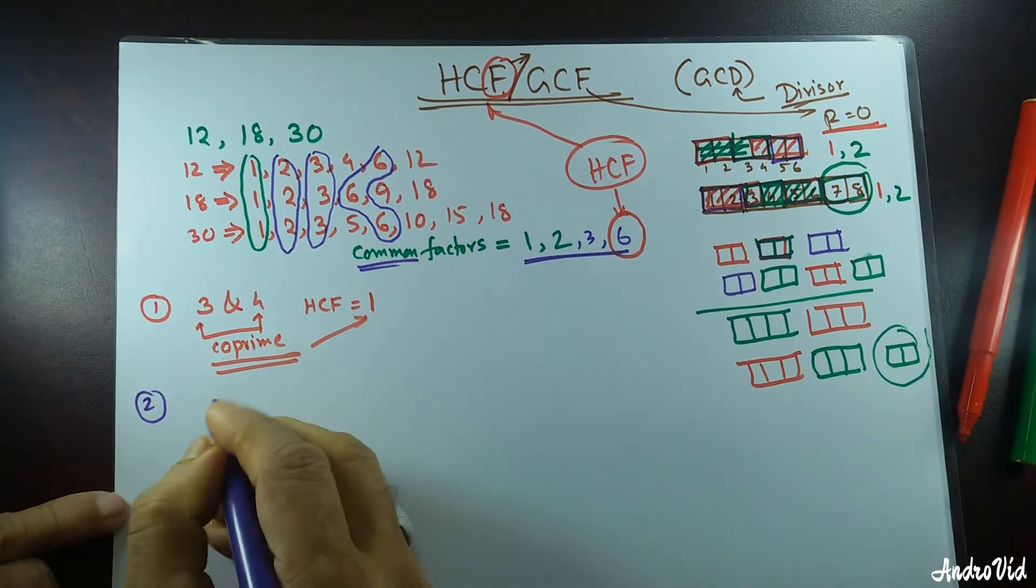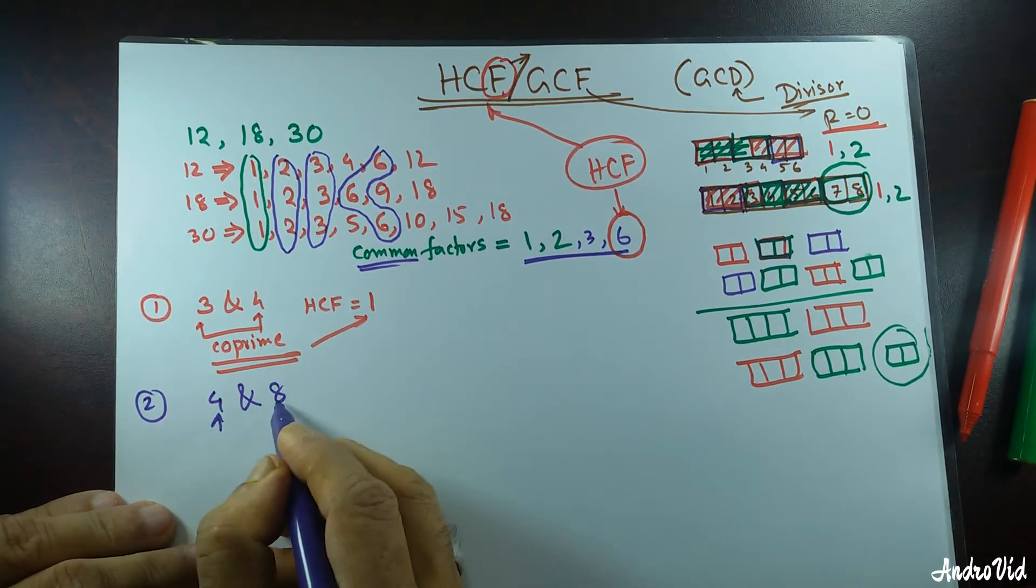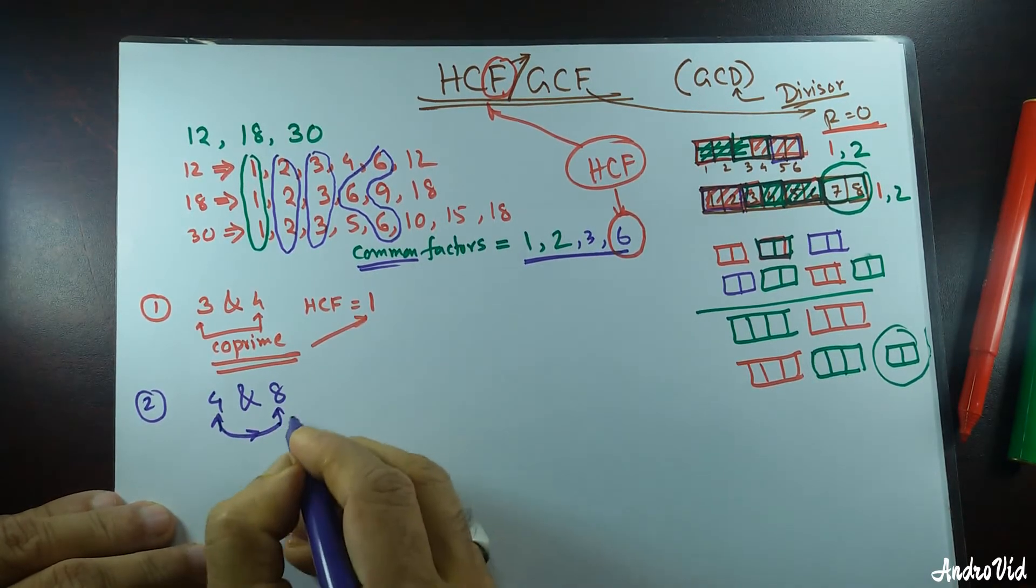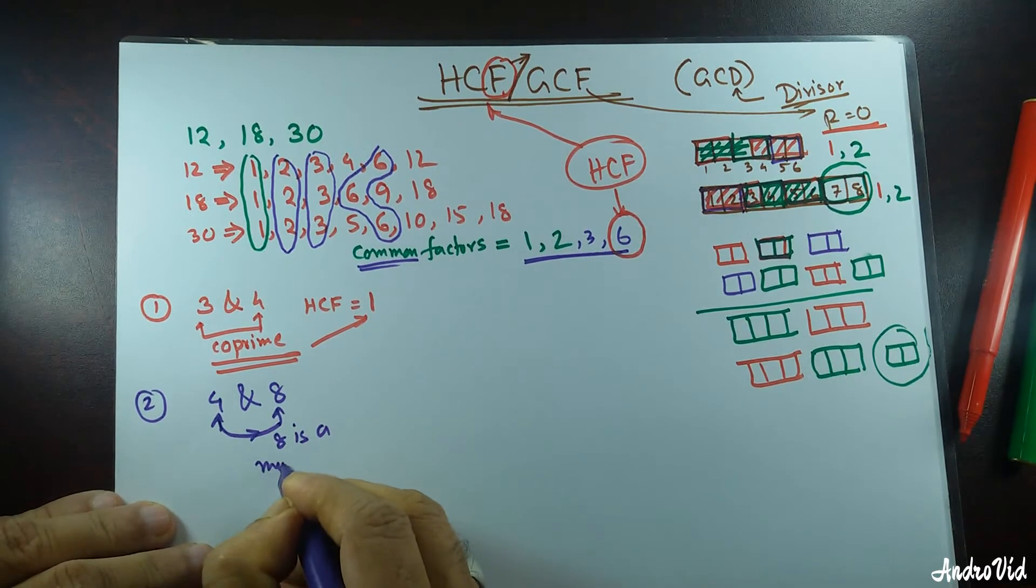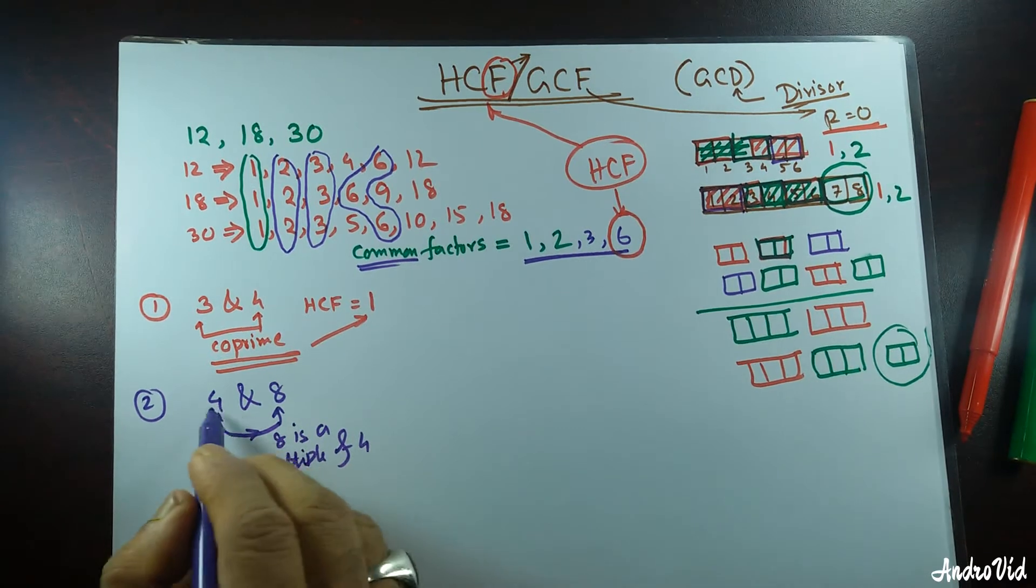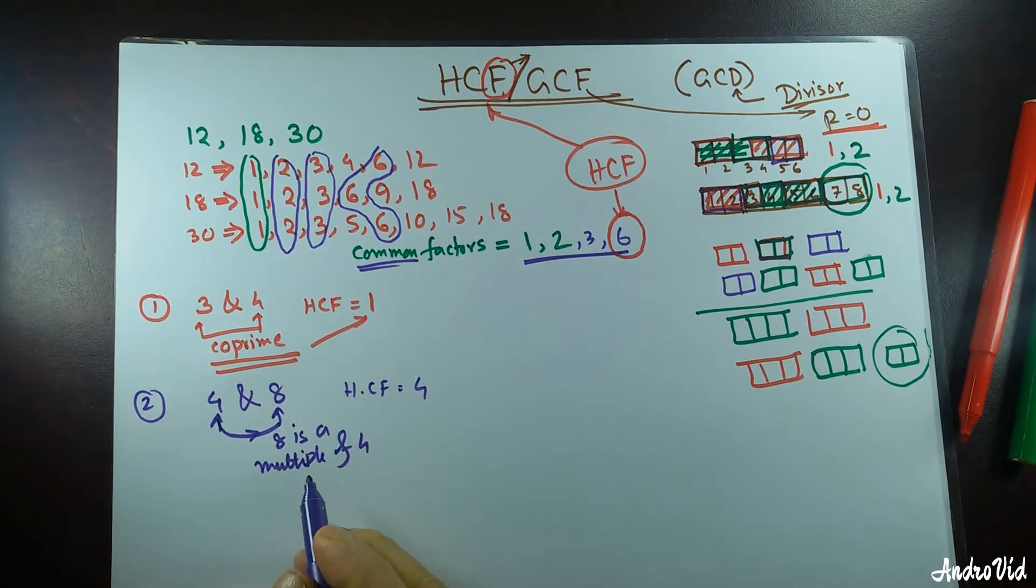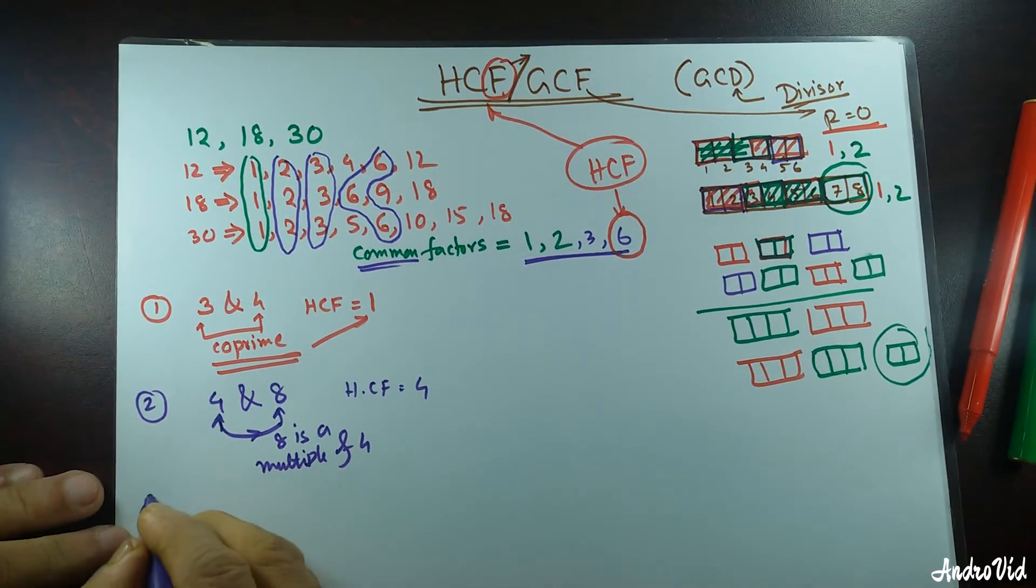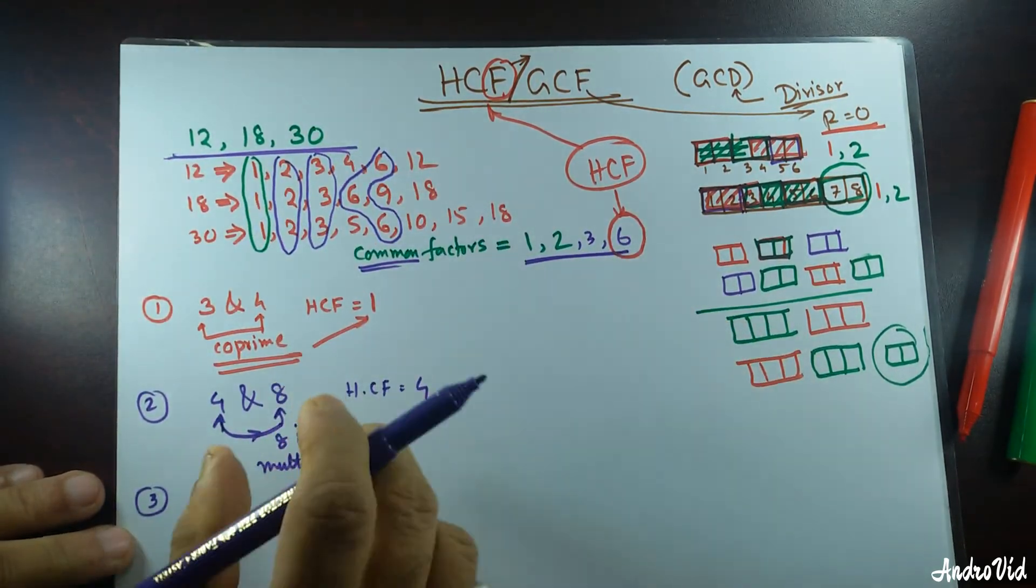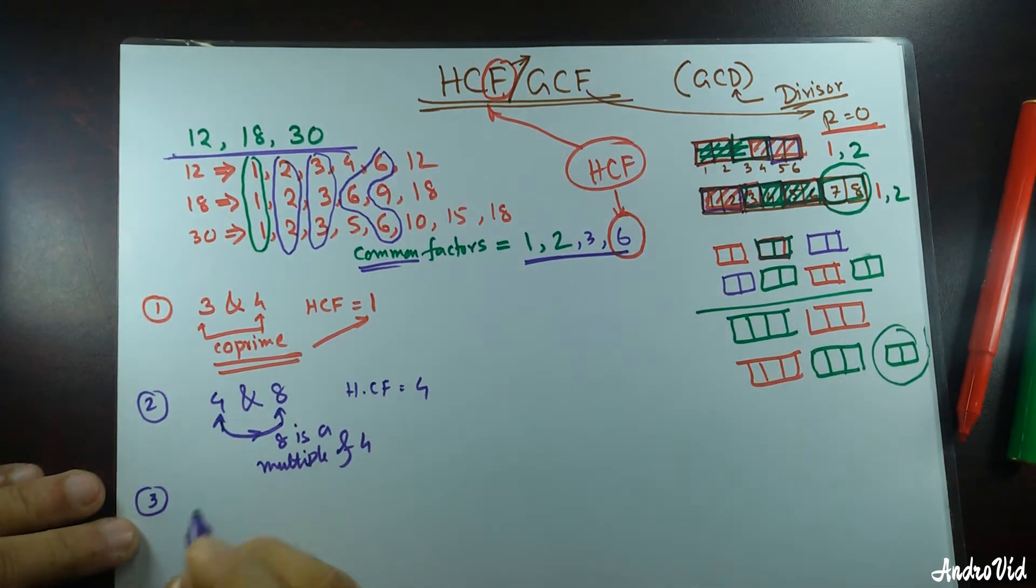Let's come to another type of number. Let's say you have 4 and 8. This 4 is divisor of 8, or we can say 8 is a multiple of 4. You are asked to find out the HCF of this. So, HCF in this case is going to be the 4, the smallest number. I'm going to use a short division method.